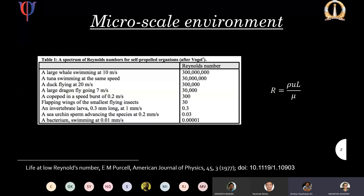At this point there was a brief interruption — the speaker's voice was breaking up due to network issues. The moderator asked Akshata to slow down and repeat the previous slide on the Reynolds number.